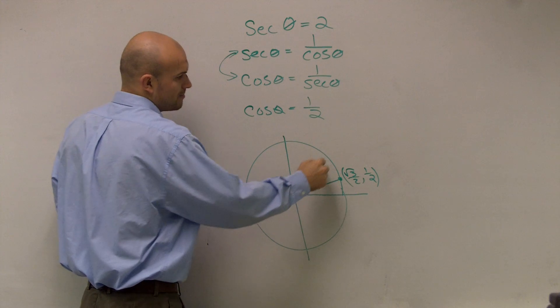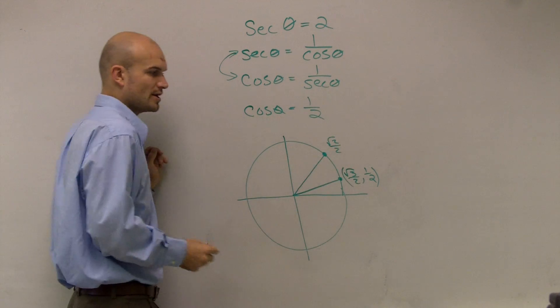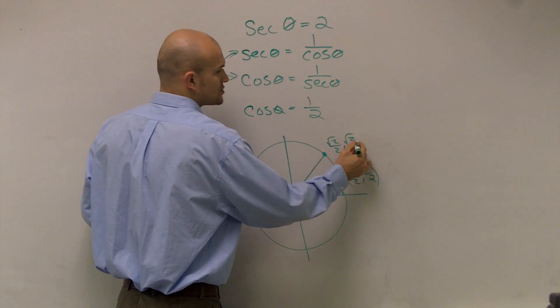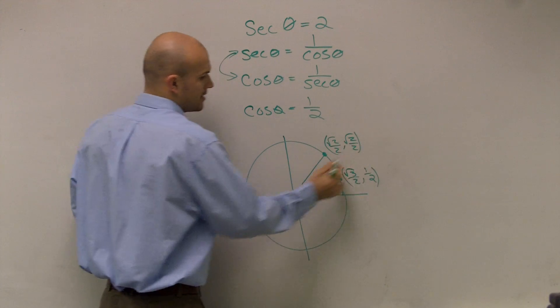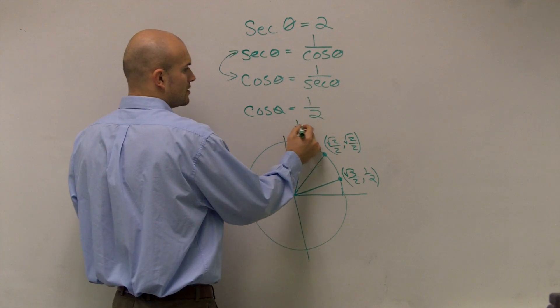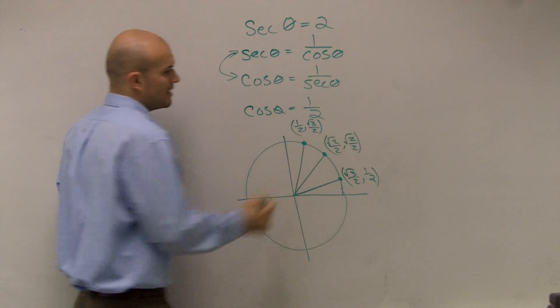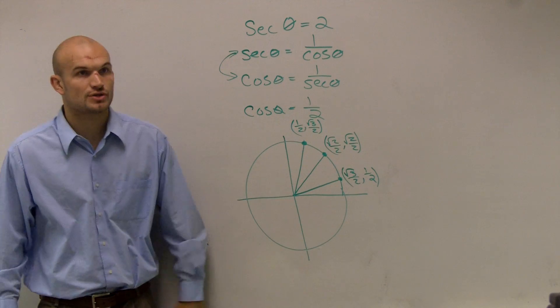The next one was pi over 4. At pi over 4, our coordinates on the unit circle were square root of 2 over 2, square root of 2 over 2. And the last one, at pi over 3, which was 60 degrees, our coordinate points were 1/2 and square root of 3 over 2.